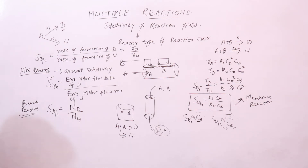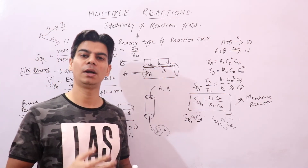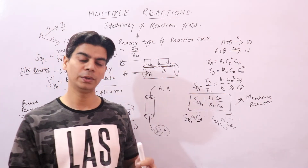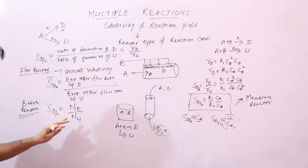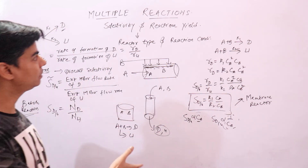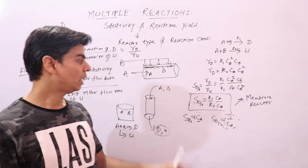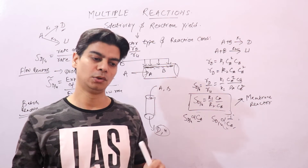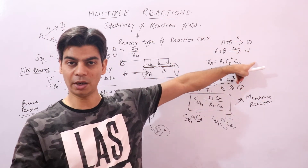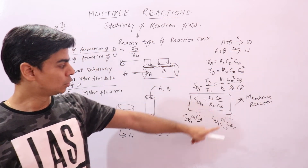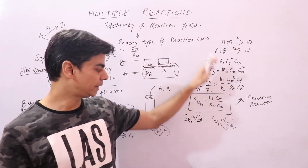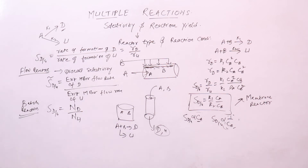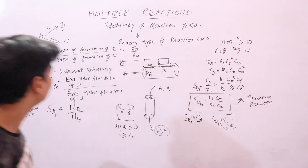In the next coming lectures, we will understand how to elaborate these concepts for parallel reactions and series reactions. Here we have just introduced selectivity and reaction yield, and how these two things help us achieve maximum desired product and minimum undesired product through selection of reactor type and reaction conditions.